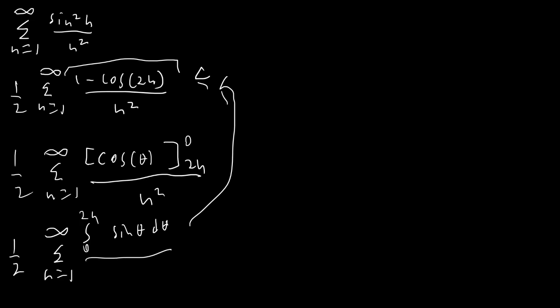Now we want to exchange the order of summation and integration, because we want to sum something up and then integrate the result. The problem is that right now our integral bounds go from zero to 2n, so they contain n. We need to take that n outside of the bounds and put it inside the integral.